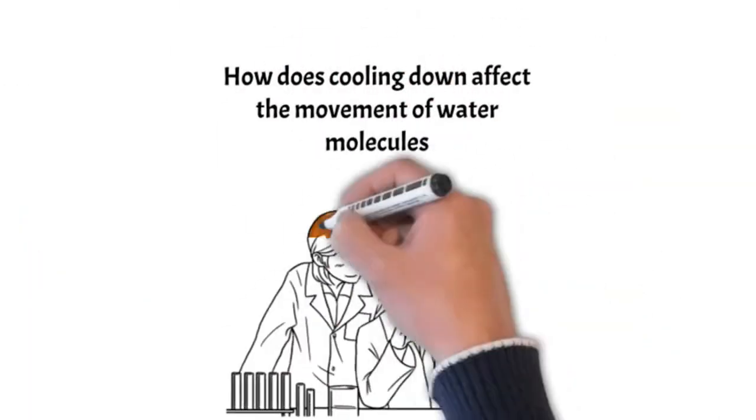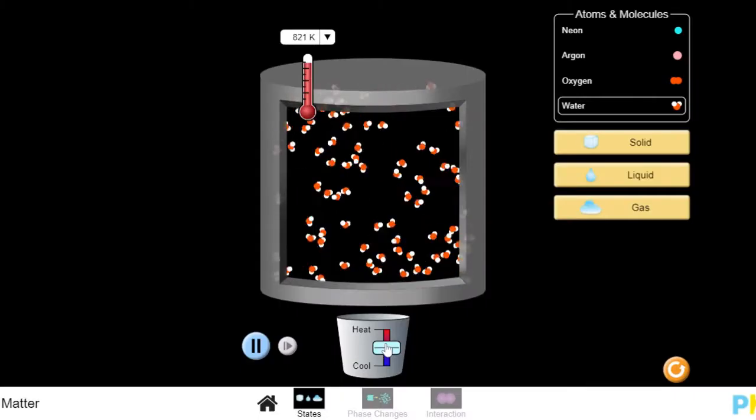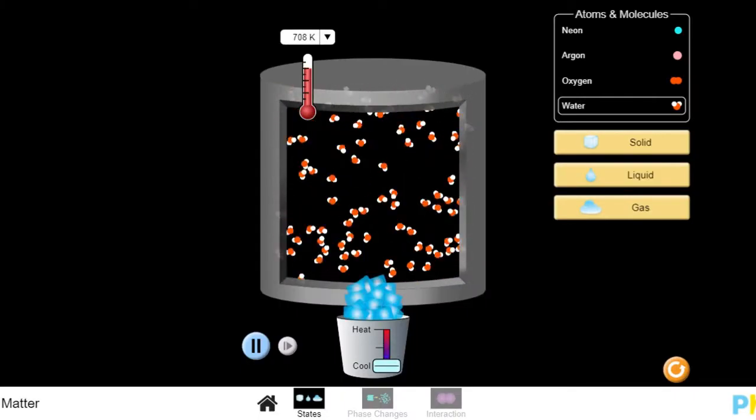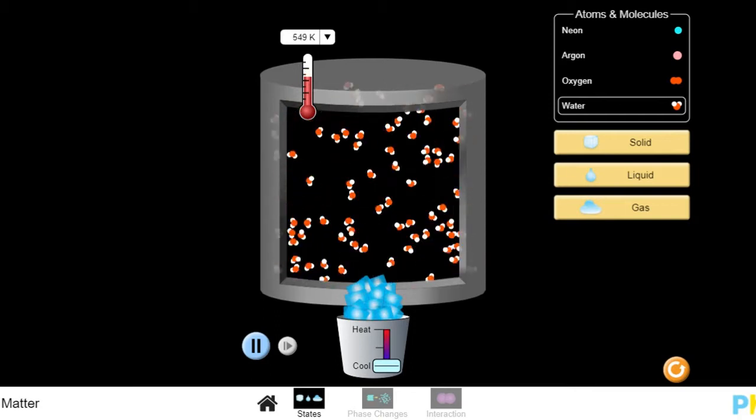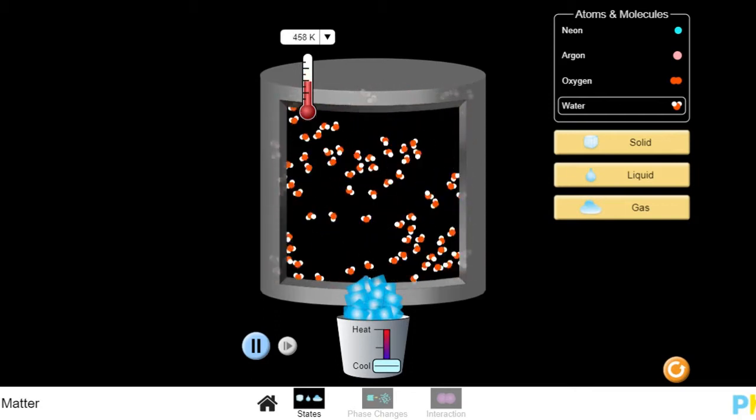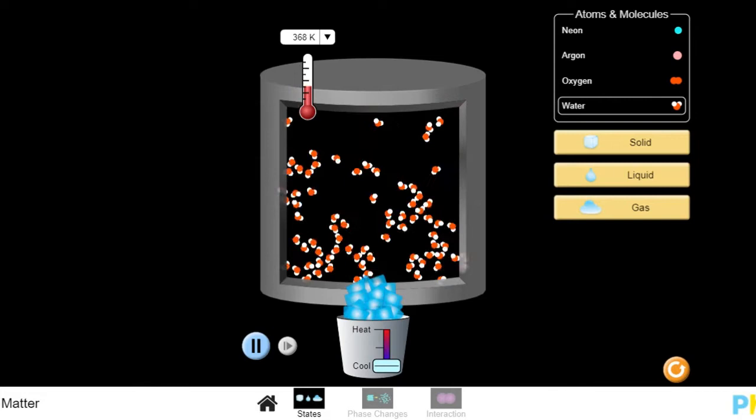How does cooling down affect the movement of water molecules? As you cool down the molecules, you see them slow down in their movement and come closer and closer together.